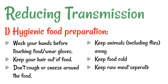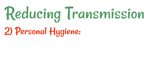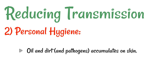Also keep raw meat separate, because raw meat is a good location to harbour lots of pathogens. When meat gets cooked the pathogens get killed, but if raw meat has been kept next to something that is going to be eaten raw, the pathogens might be on that raw food and can still be spread. Another method is personal hygiene — a lot of oil and dirt accumulates on the skin throughout the day.